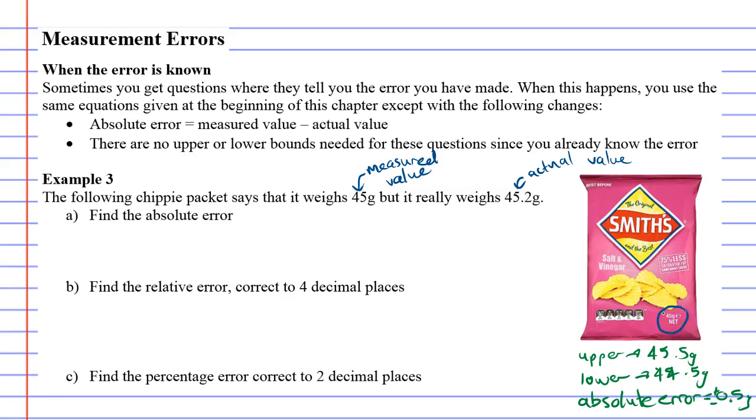Now when we know what the error is, the absolute error changes because we look at these two numbers we have. The absolute error is actually 0.2 grams because our measured value was 0.2 grams below what it actually is. So the absolute error is found using this formula: measured value minus actual value. So 45 grams minus 45.2 grams, which comes out as negative 0.2 grams because it was measured 0.2 grams below what it actually was.